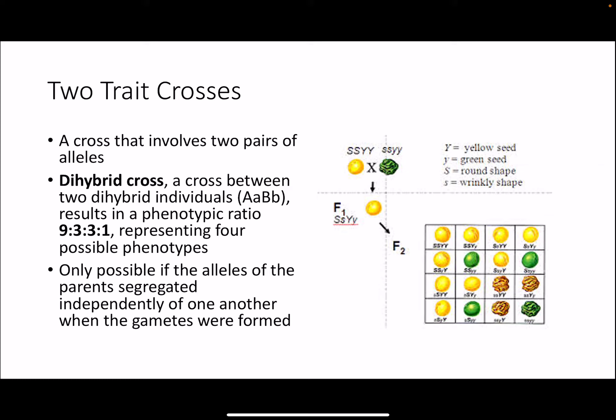You can also use a Punnett square to do two-trait crosses, tracking two pairs of alleles. A dihybrid cross is a cross between two dihybrid individuals — meaning they're heterozygous for both traits being tracked. The genotype would be big A, little a, big B, little b. This always results in a phenotypic ratio of nine to three to three to one, representing the four possible phenotypes.